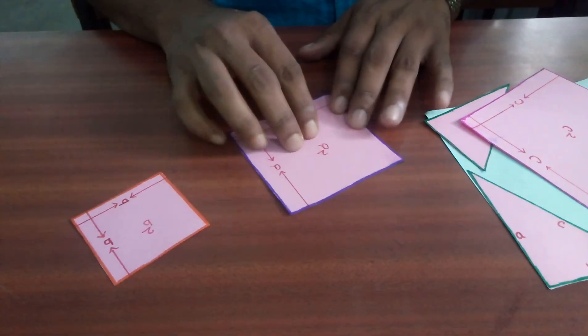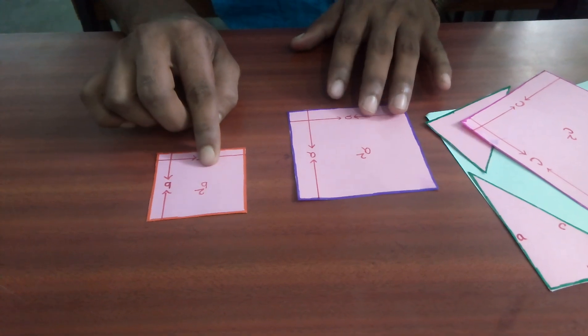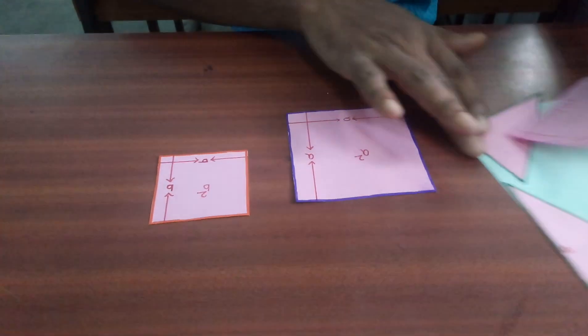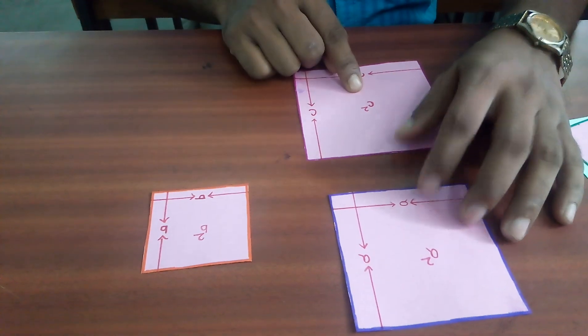we can say area of this square with side C unit that is C square is equal to the area of the square with side A unit and area of the square of side B unit. So, we can say A square plus B square equal to C square.